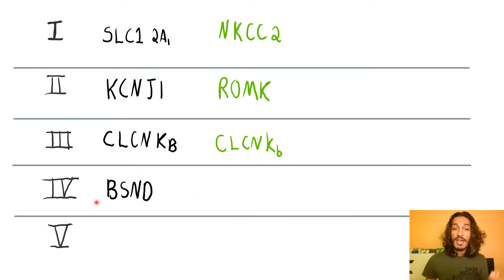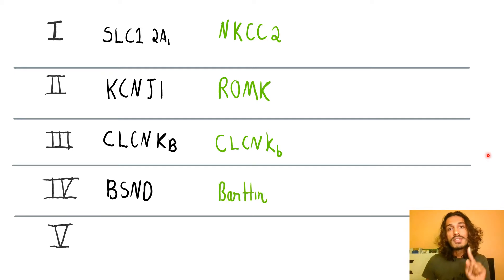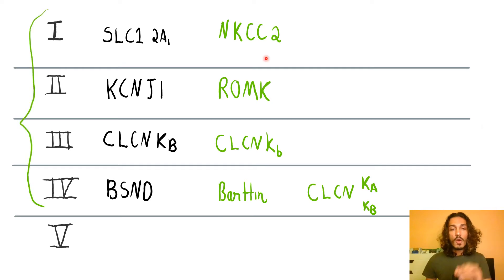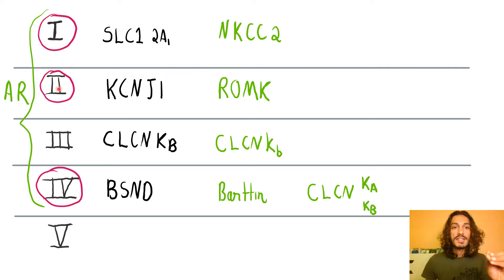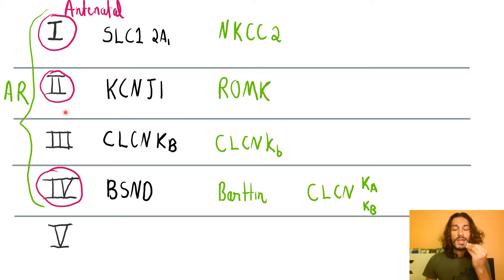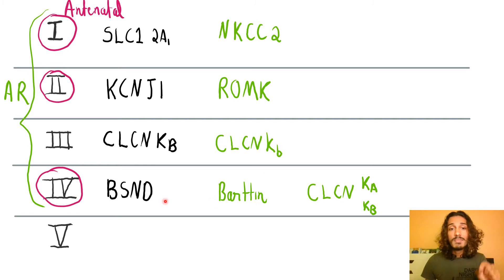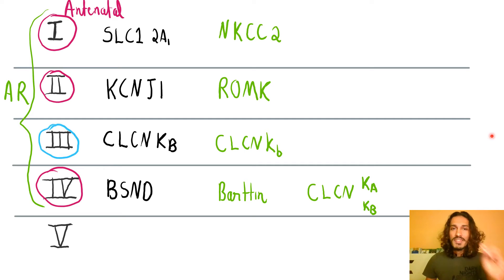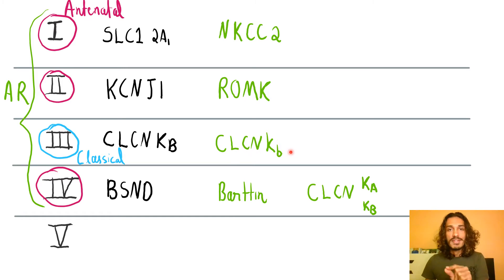Type 4 has a defect in the gene BSND, which codes for your barttin subunit. Barttin plays a role in not only the ClC-Kb type of chloride channel but also the ClC-Ka variety. All four of these types are autosomal recessive. Types 1, 2, and 4 are antenatal, so they are more severe. In Type 4, barttin itself is affected so both ClC-Ka and ClC-Kb are affected. The first variety discovered was actually the childhood variety, termed classical — Type 3 — where only ClC-Kb is affected, so it is not as severe.